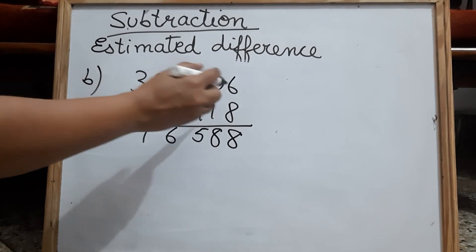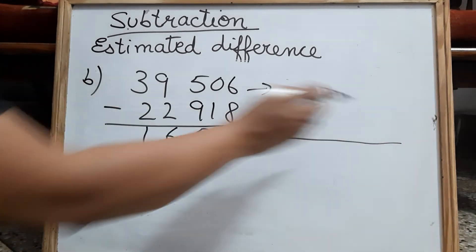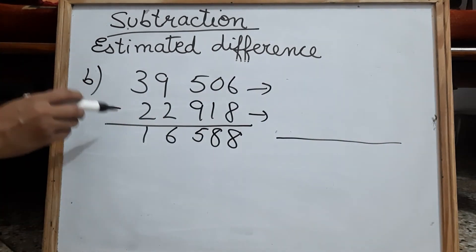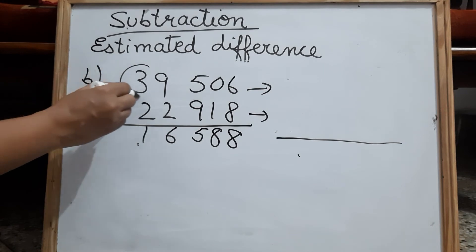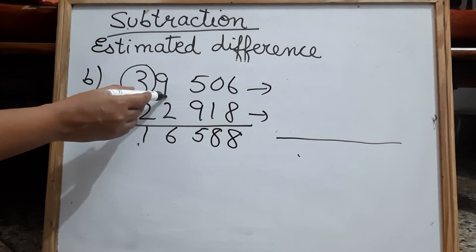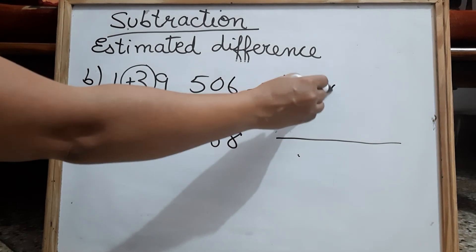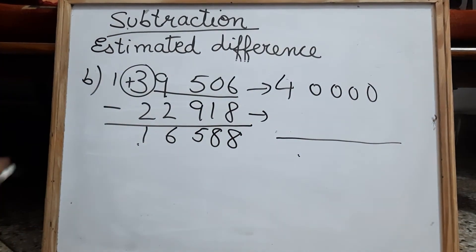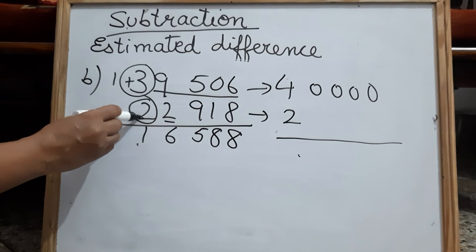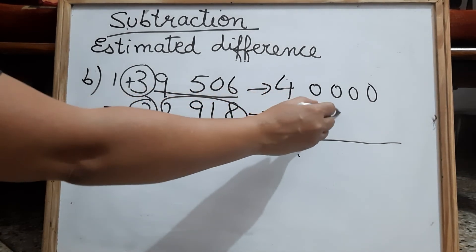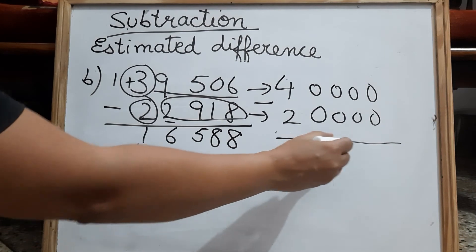Now children, estimate both the numbers and very easily you will get the estimated difference. This is the actual difference and this will be the estimated difference. We are going to estimate the 10,000 place. The next digit is more than 5, so plus 1 in the required place — it becomes 4, and the rest of the 4 digits will become 0. Now estimate the 10,000 place of the second number. The next digit is less than 5, so this does not change — it remains the same, and the next 4 digits will become 0. So the estimated difference is 20,000.